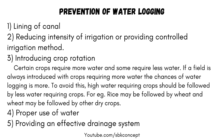To avoid waterlogging, high water-requiring crops should be followed by less water-requiring crops. For example, rice may be followed by wheat, and wheat may be followed by other dry crops. Proper use of water and providing an effective drainage system are also important preventive measures.